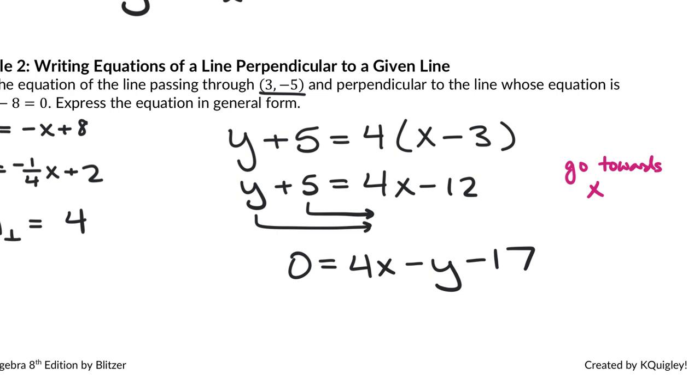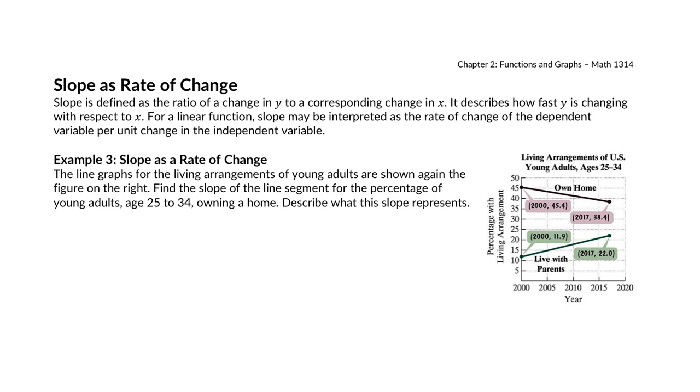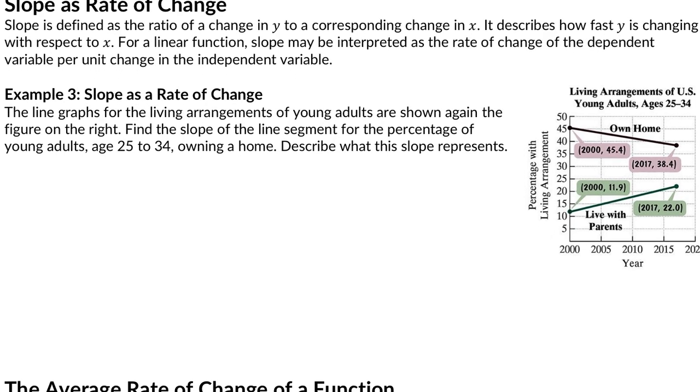And that's the basics with slope. When we start to get a little bit more advanced with slope, we start to call it the rate of change of the function and it describes a little bit more about the situation and can be applied to functions that are not necessarily linear. So, slope is still defined as the ratio of a change in Y to a corresponding change in X. It describes how fast Y is changing with respect to X. So, our slope is this rate of change but we don't necessarily have just rates of change for linear functions. We can find rates of changes for situations with context and situations that are not linear. So, in example three here, it says the line graphs for the living arrangements of young adults are shown again in the figure on the right. I don't know why the word again is there. Find the slope of the line segment for the percentage of young adults ages 25 to 34, which is the entire, that's what the graph is showing us, of owning a home and describe what the slope represents.